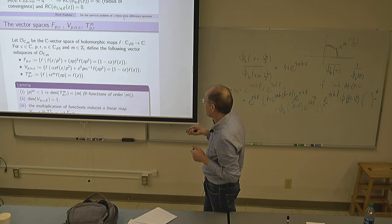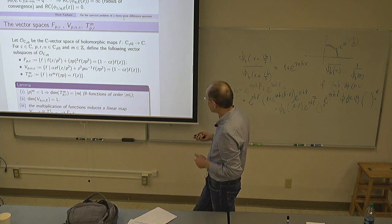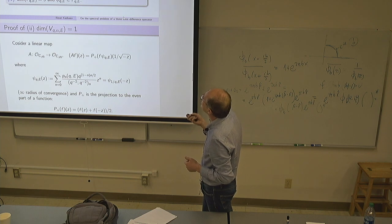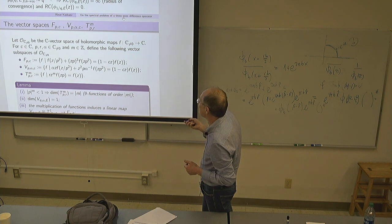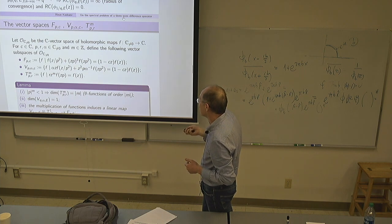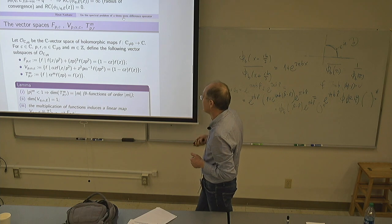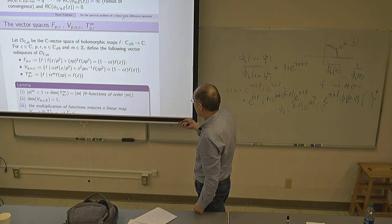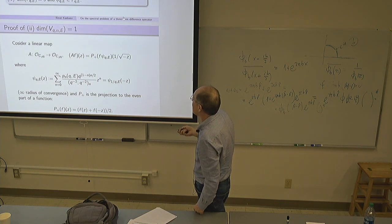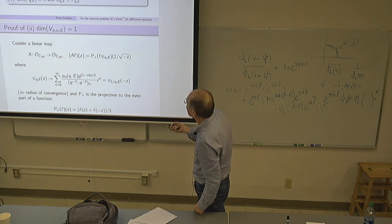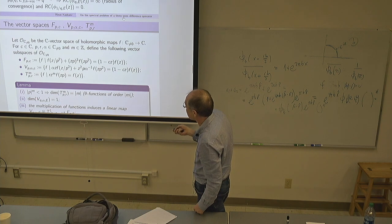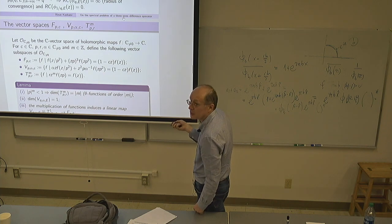When we set p = q and alpha and E are arbitrary, V is one-dimensional. The space F_{q,E} is three-dimensional — the space of solutions has dimension three. There is a multiplication connecting them: this one-dimensional space V, multiplied by certain theta functions of weight one, lands in F_{q,E}. The proof that V is one-dimensional follows from relating this space to a space of theta functions by an explicit operator.